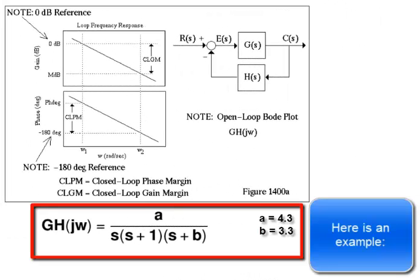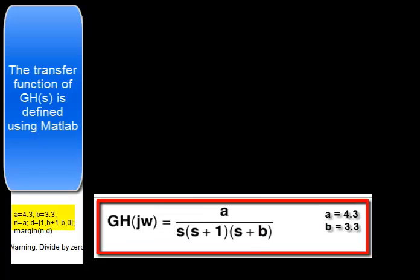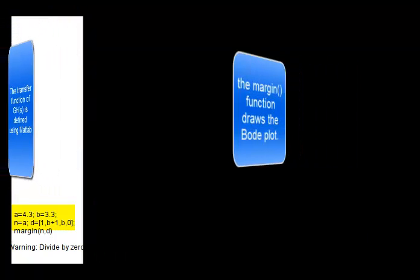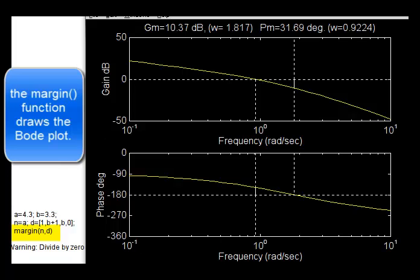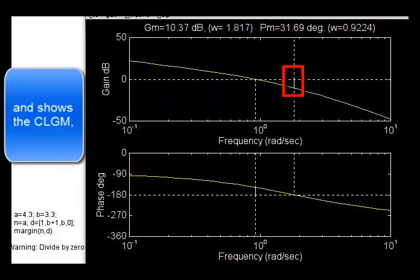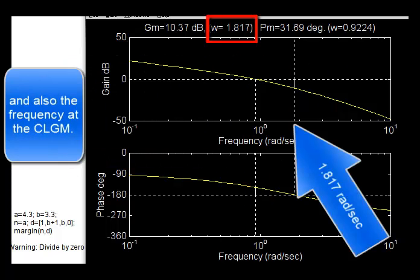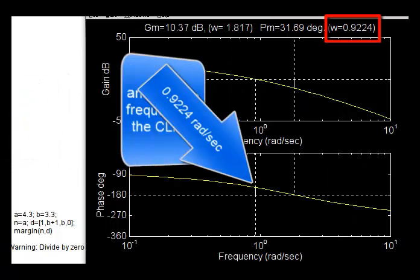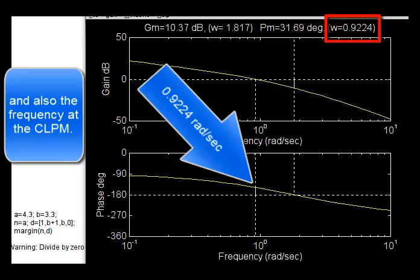Here is an example. The transfer function of g h is defined using MATLAB. The margin function draws the Bode plot and calculates the closed-loop gain margin and the closed-loop phase margin. It shows the closed-loop gain margin, the closed-loop phase margin, and also the frequencies at the closed-loop gain margin and phase margin.